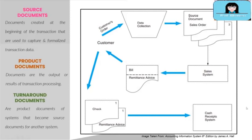Finally, turnaround documents are product documents of one system that become source documents for another system. In the diagram, the remittance advice attached to the invoice or billing statement is detached by the customer and sent to the seller accompanied with a check payment. The remittance advice is a product document of the sales system, which is then used as a source document or reference in the cash receipts system to record collection of invoices or billing statements. Therefore, the remittance advice serves as a turnaround document.